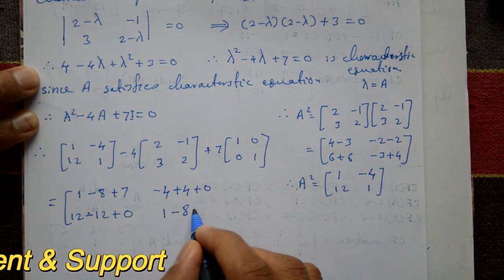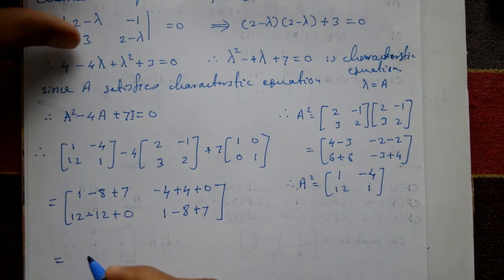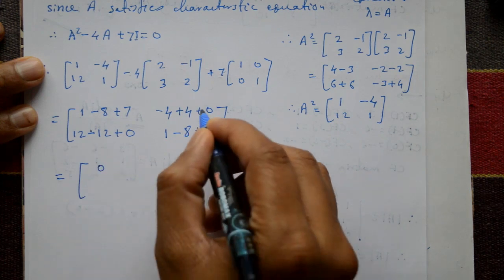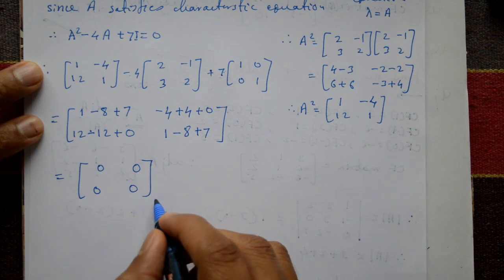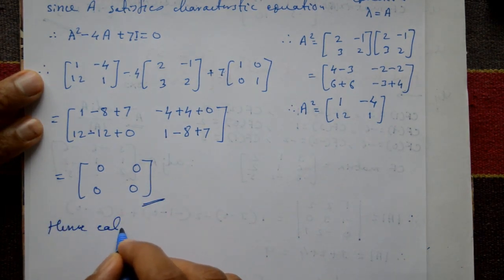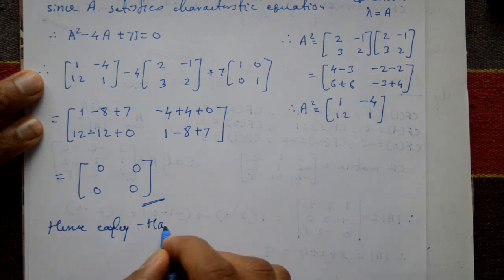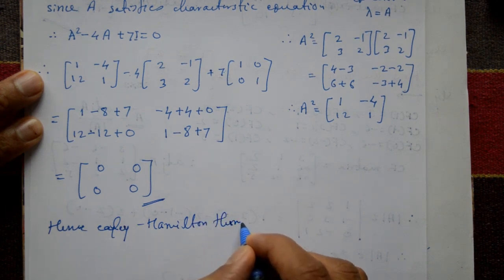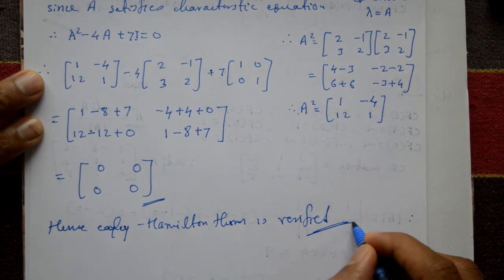Fourth element: 1 minus 8 plus 7 = 0. All elements equal zero, giving the zero matrix. Therefore the Cayley-Hamilton theorem is verified. This is the required solution.